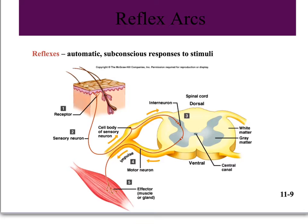Reflexes are automatic subconscious responses to stimuli — the brain is not involved in the response. In this withdrawal reflex example, the receptor is located in the skin. The impulse travels to the spinal cord, where the information from the first neuron is conveyed to a second neuron embedded in the spinal cord, which then converges onto a motor neuron leaving the spinal cord and going directly to the muscle. This reflex involves three neurons only.